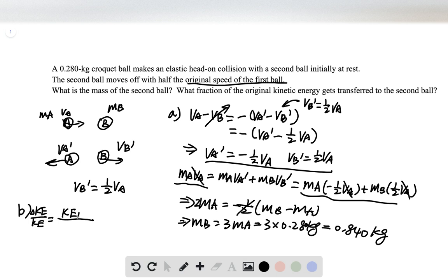This is equal to one half mB vB prime squared over one half mA vA squared. Everything's a ratio, so mB equals 3mA over mA, one half cancels, vB prime is one half vA so we get one half vA squared. This equals 0.75, so 75% of the kinetic energy will be transferred to the heavier ball.